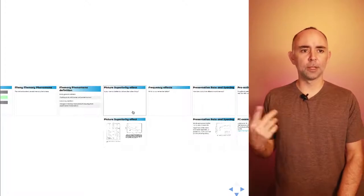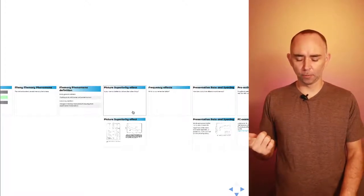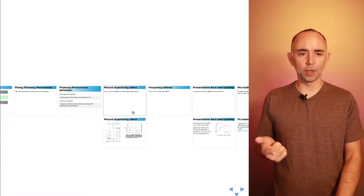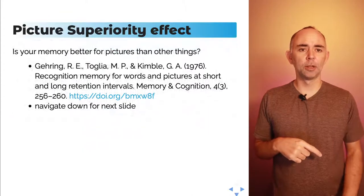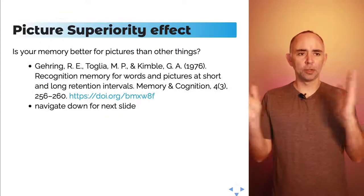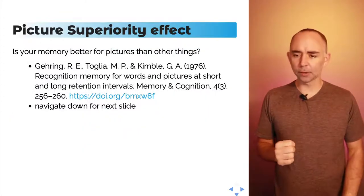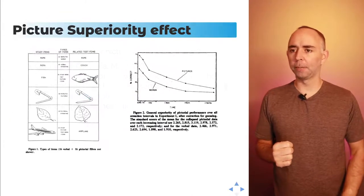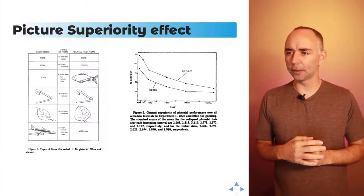If you're looking at the slides on your web browser, you can press the O button on your keyboard and it shows the overview. Let's check out the picture superiority effect.